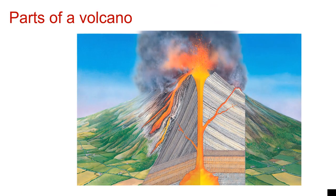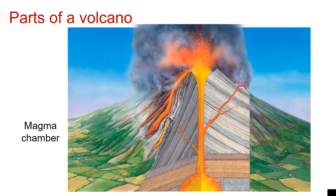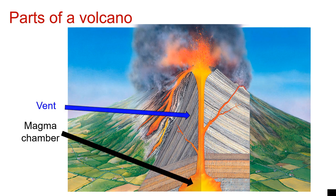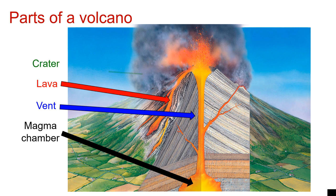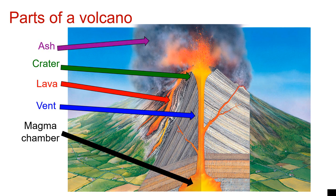Let's take a look at the parts of a volcano. Here's a diagram. At the very bottom you've got the magma chamber. A vent is where the magma spews out. Once the magma comes outside the volcano it is called lava. You've got a crater in the volcano, which is the opening at the top. And then lots of ash also comes out of a volcano.